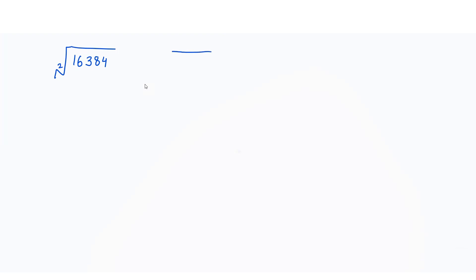In the square root we have to write here 2, or we can write it without that number 2. If we make this symbol without any number, that automatically means we have to calculate the square root. So let's make the prime factors of this number.